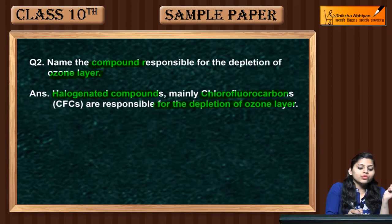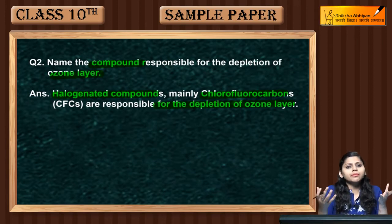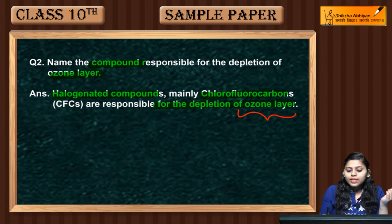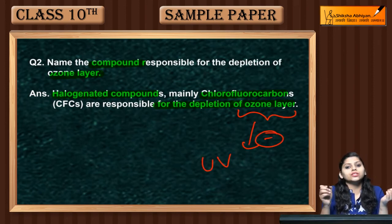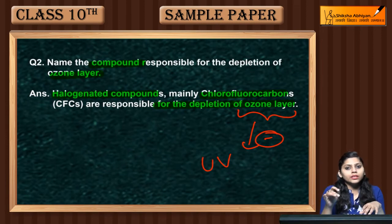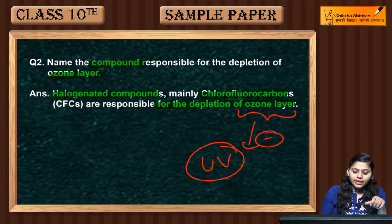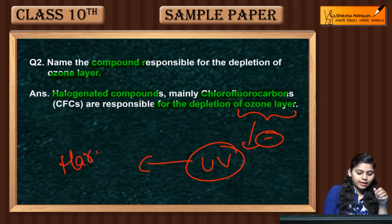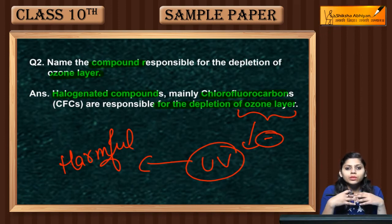Why do we talk about the ozone layer? The ozone layer prevents the entry of UV radiation into Earth's atmosphere. If UV radiation enters, it has harmful effects on living organisms, including human beings.